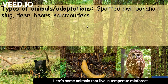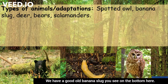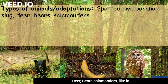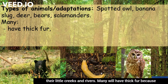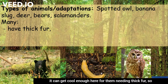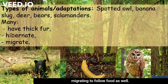Here are some animals that live in temperate rainforests. We have the spotted owl, the banana slug, deer, bears, and salamanders in their little creeks and rivers. Many will have thick fur because it can get cool enough here. Some will be hibernating during winter months and also migrating as well. Those are temperate rainforests.